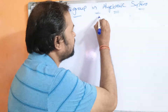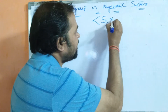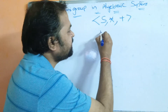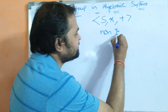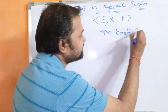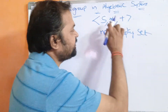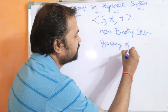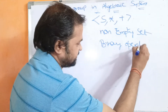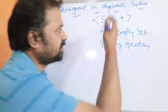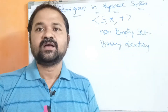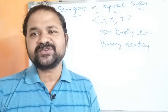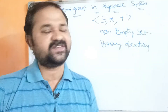Let we have an algebraic system called S, star, plus. Here S means a non-empty set — that means the set must contain some elements. Star and plus are nothing but binary operations which are performed on S. Instead of star or plus, we can use only star, or only plus, or minus, or division, or any other symbol as we want.